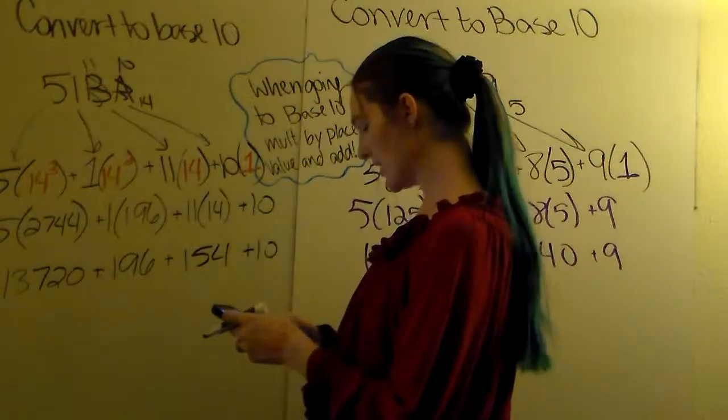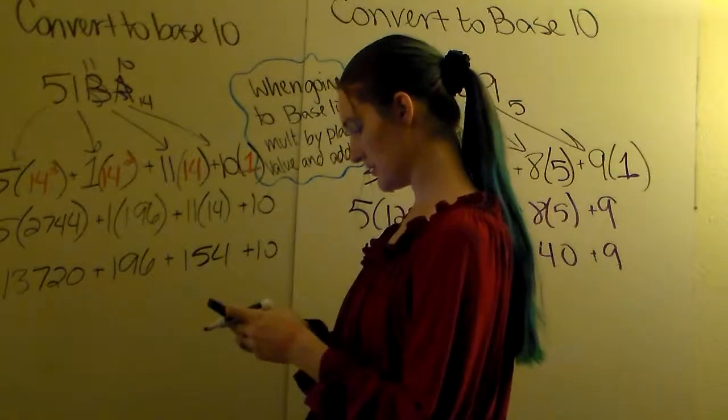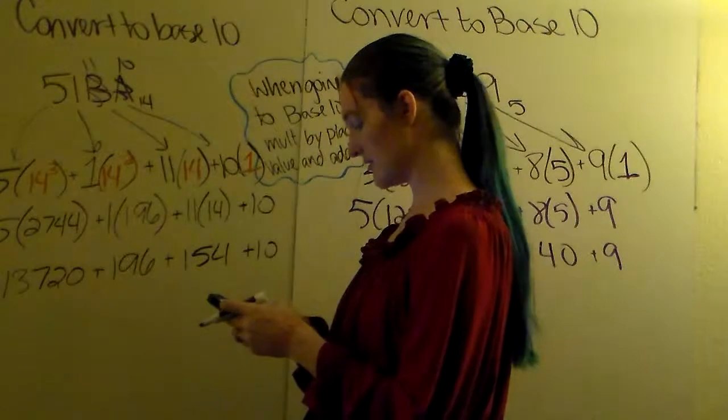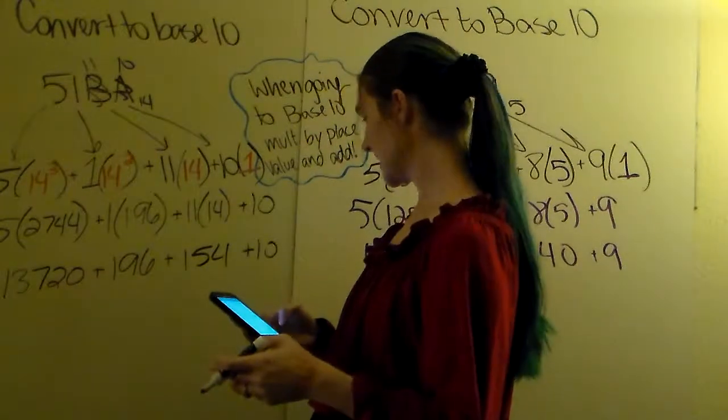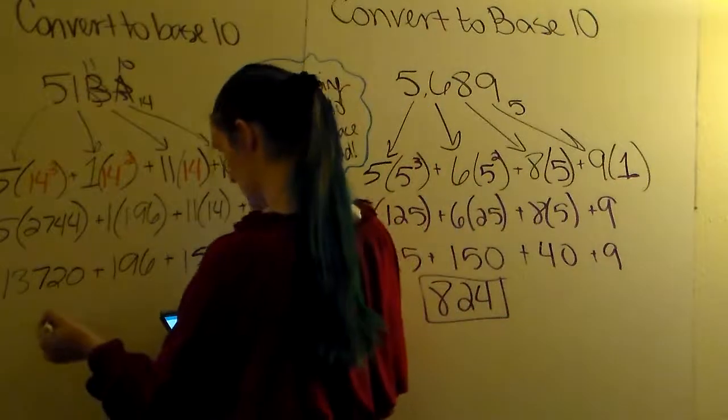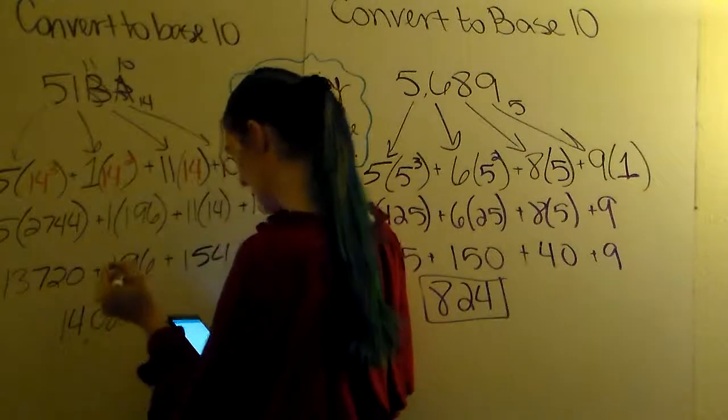Then you're going to add all these together. We've got 13,720 plus 196 plus 154 plus 10. Gives me 14,080.